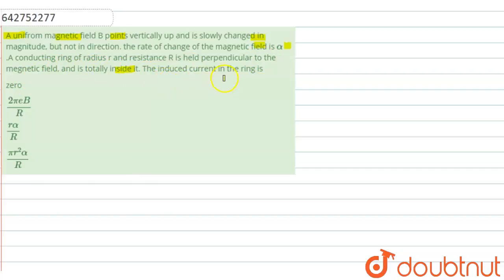The induced current in the ring is? So in this question, it is given that we have a changing magnetic field which is in upward direction. A conducting ring of radius r and resistance R is held perpendicularly to the magnetic field and is totally inside it.